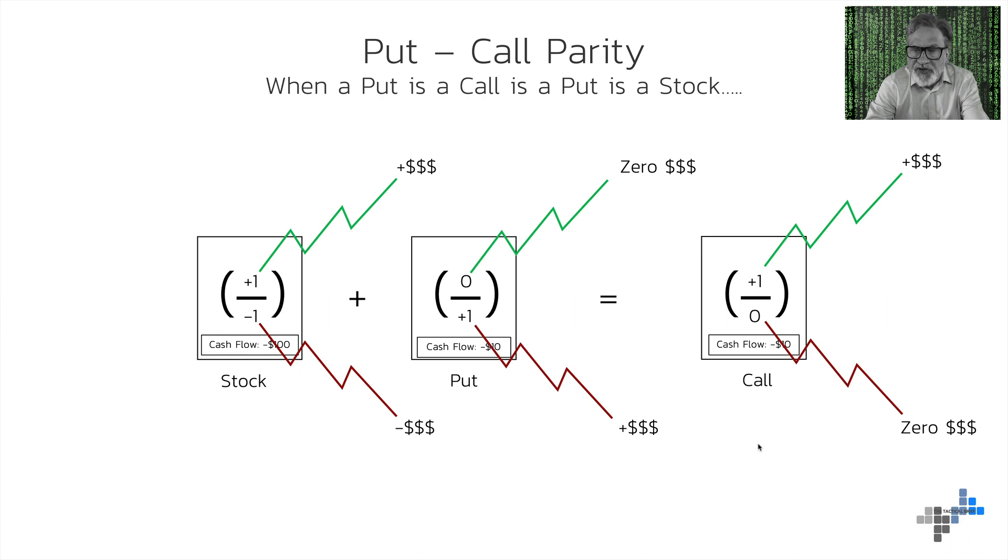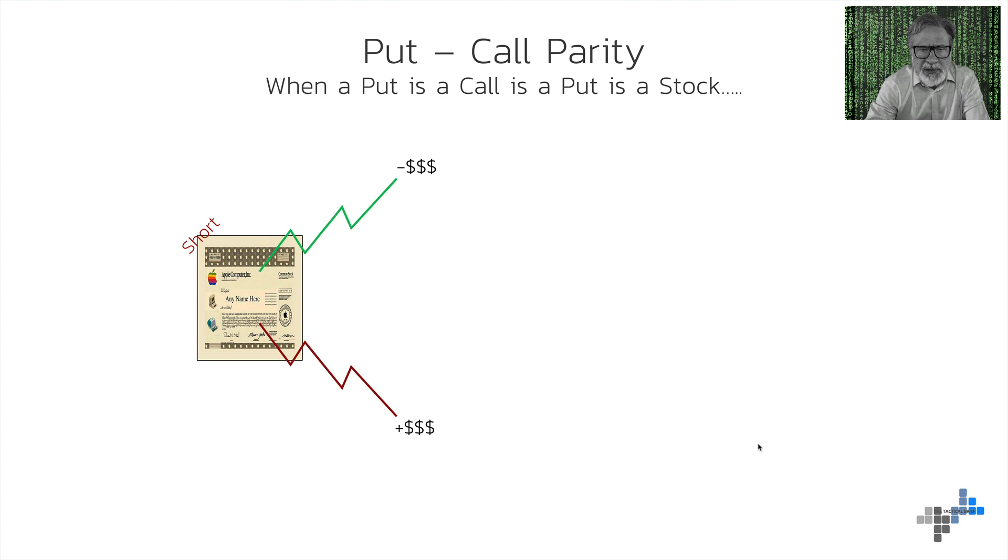So, you duplicated a call option by buying the stock and buying a put. But, if something pays out the same amount of money, should they have a different price or should the price be the same? You can answer that.